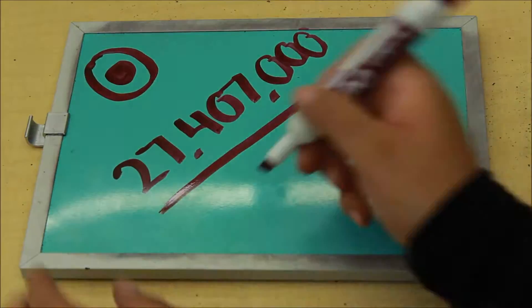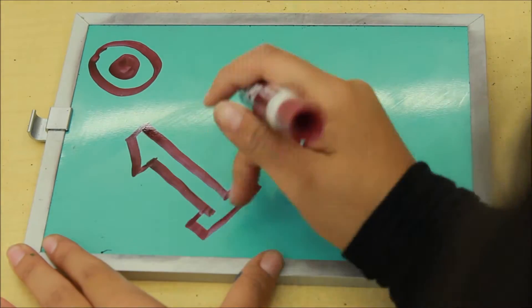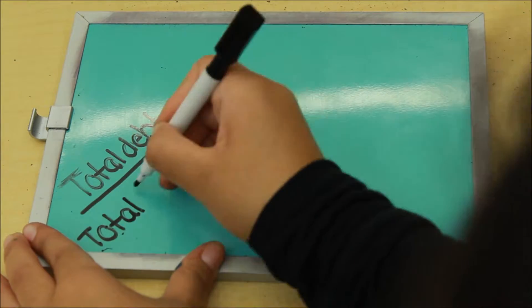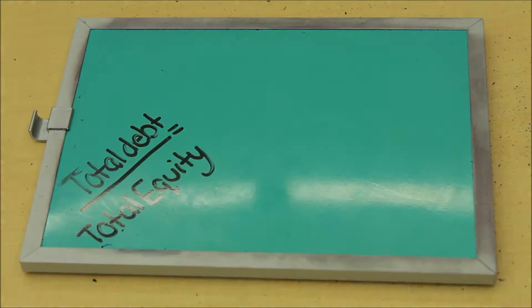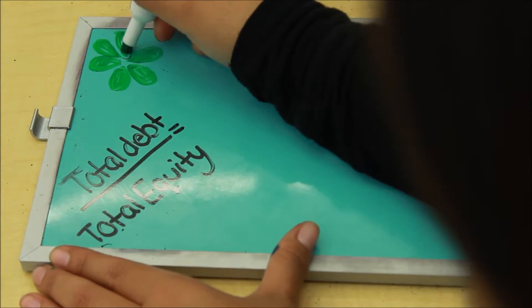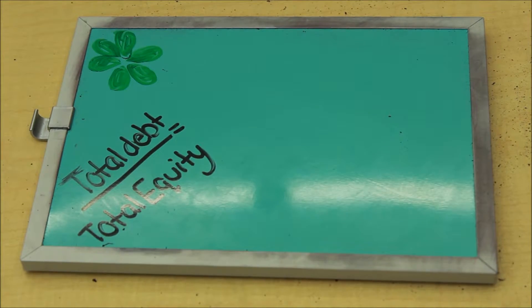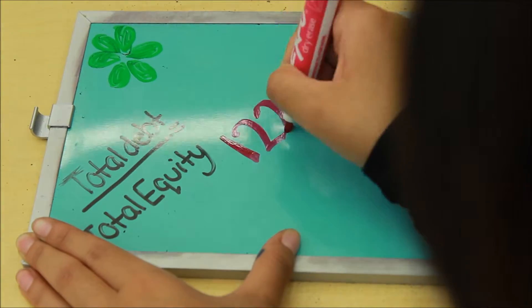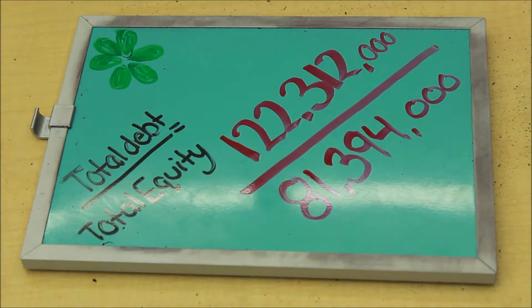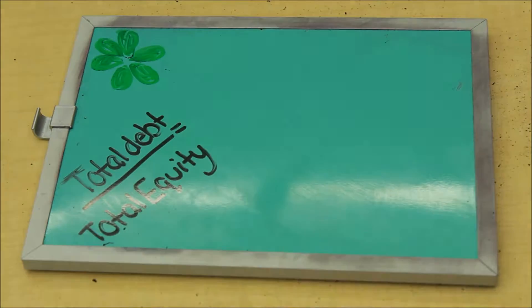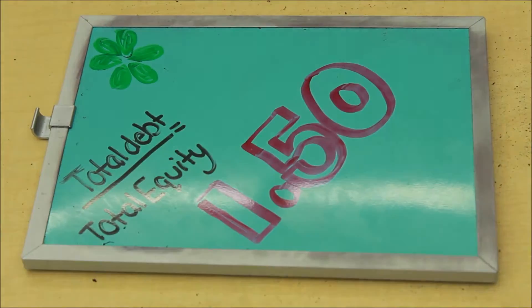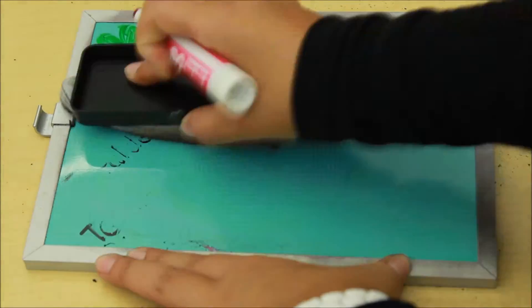This is done by taking the total debt and dividing it by the total equity. So for Walmart, we take their total debt, which is $122,312,000 divided by the total equity of $81,394,000, which will come out to 1.5, so they have less debt to finance their company.